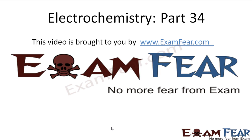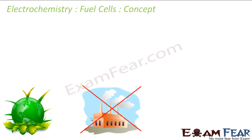Hello friends, this video on electrochemistry part 34 is brought to you by examfear.com — no more fear from exams. Today we will learn about fuel cells. Let's first understand the concept behind fuel cells. Generally, about 70% of electricity generation is done by thermal power plants by burning coal, which is not an efficient way to produce electricity, but it is still a major source.